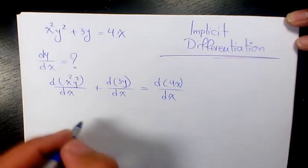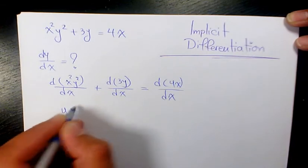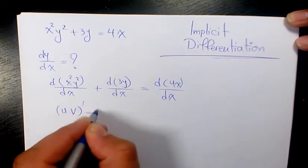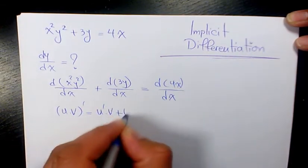So the first thing I need to use is the product rule. Product rule uv, the derivative is going to be u prime v plus u v prime.